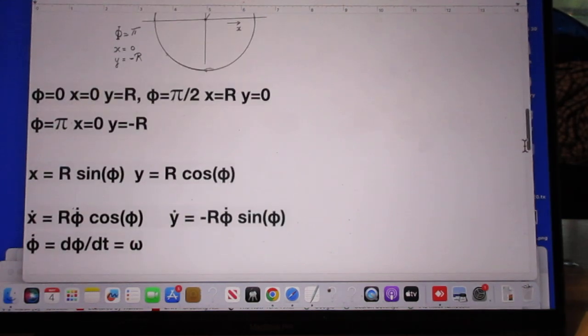And he mentioned that here. Phi is zero, x is zero, y is plus r, then phi is pi over two, then x is r, and y is zero. And when phi is pi, x is zero, and y is minus r.